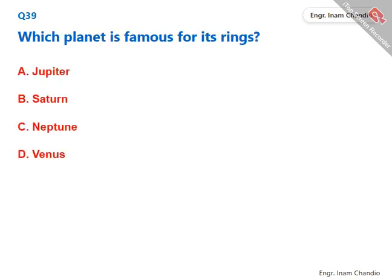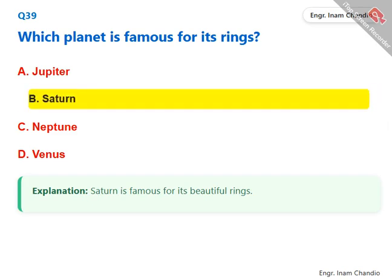Which planet is famous for its rings? Saturn is famous for its beautiful rings. The correct answer is B. Saturn.